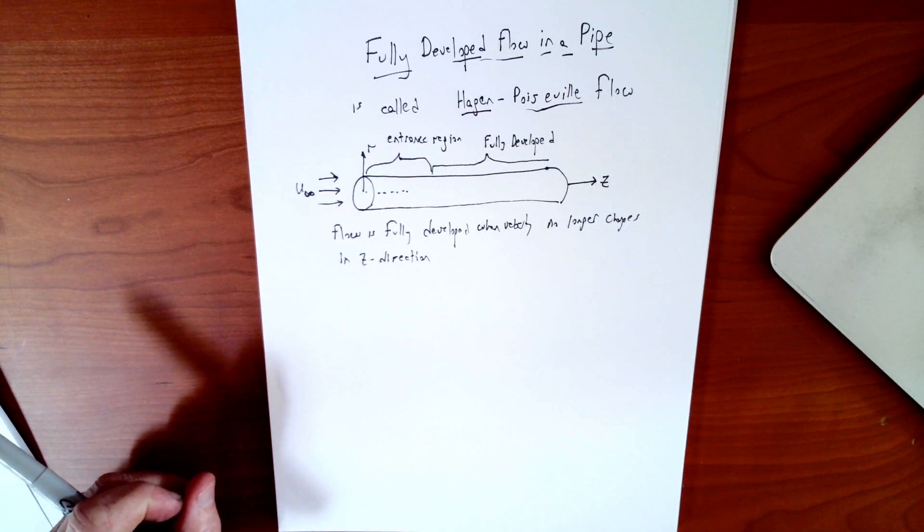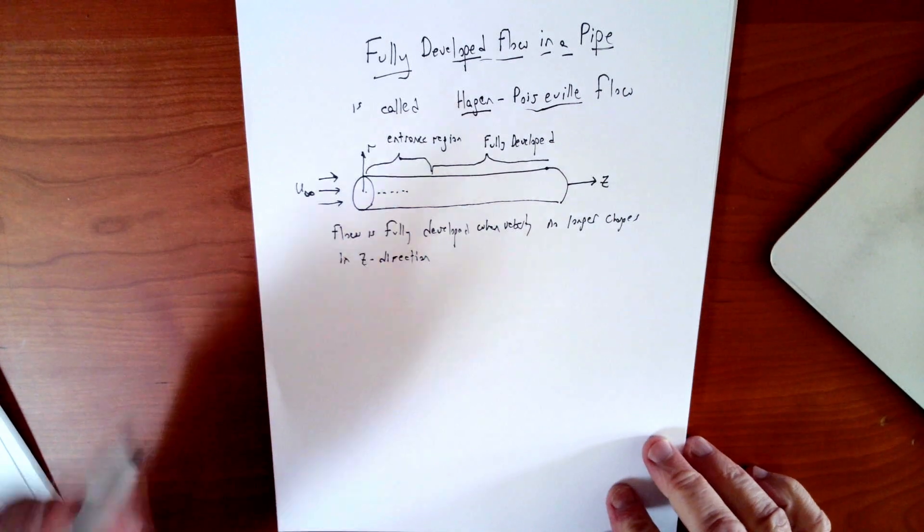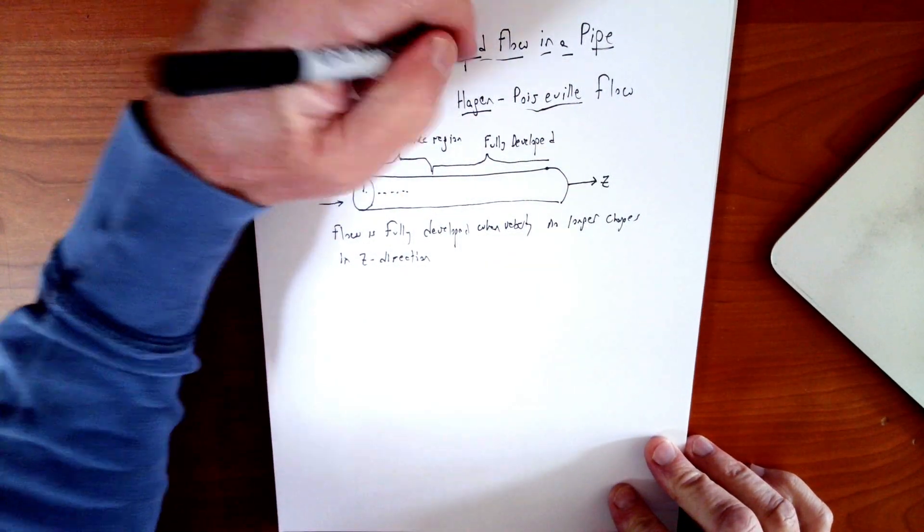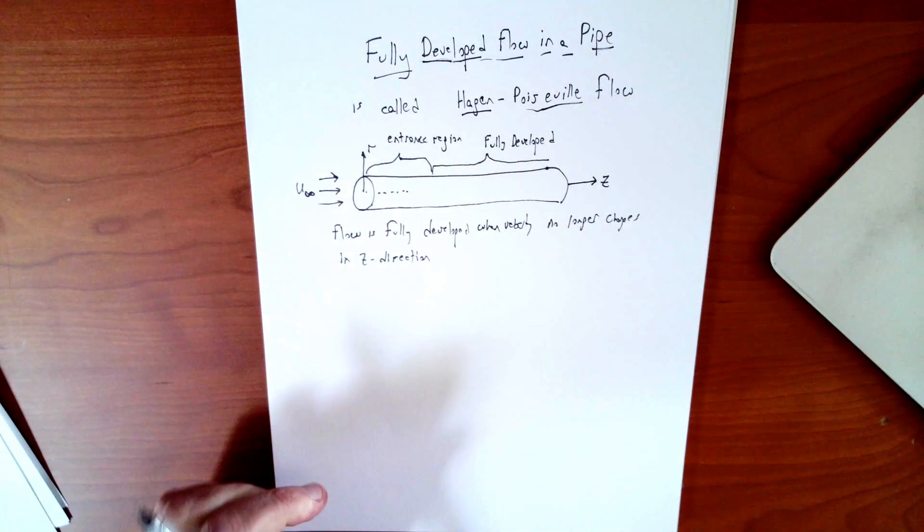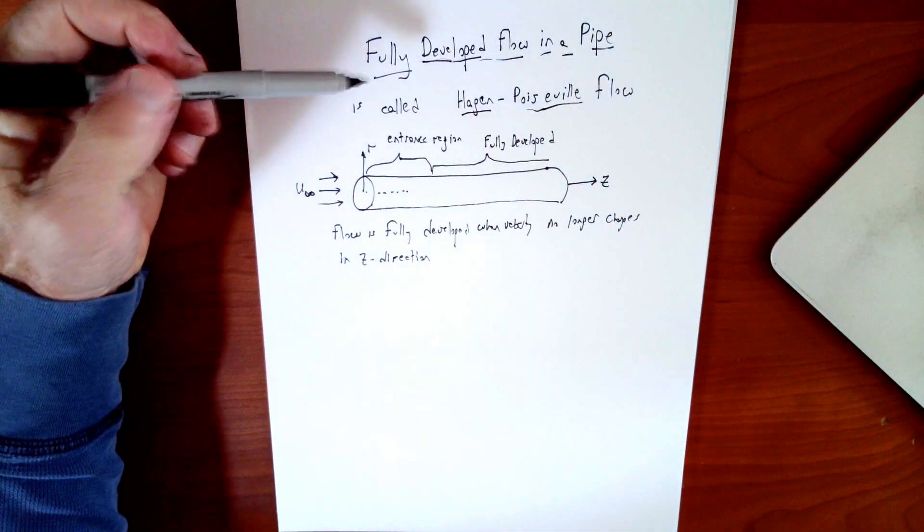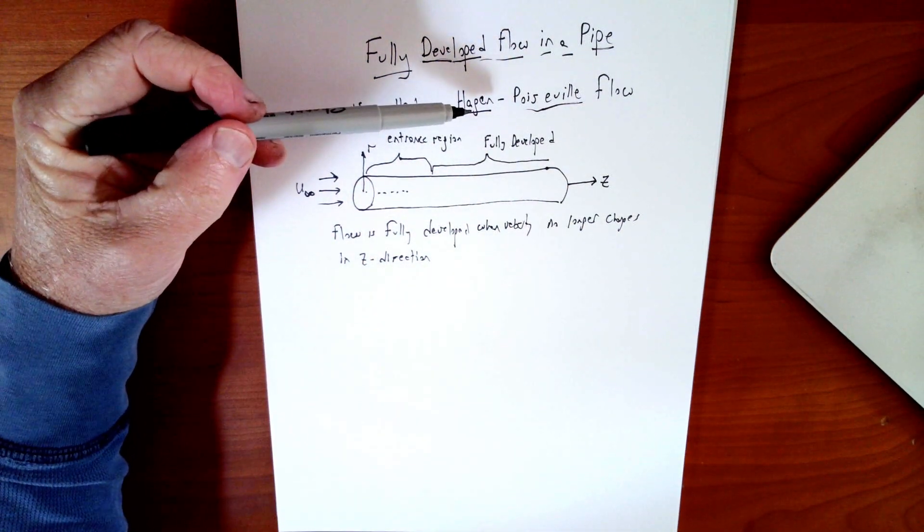Another domain where flow becomes fully developed, and one that is arguably of more engineering practical interest, is the flow in a pipe. So we're going to take a look at that. Fully developed flow in a pipe has a name, Hagen-Poiseuille flow.